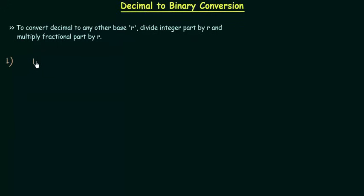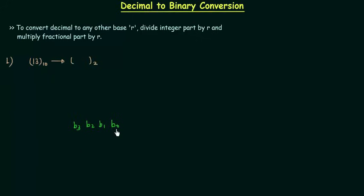Let's say the decimal number is 13 and we want the binary equivalent of 13. If you remember the last presentation, I introduced positional weights for the binary number system. Let's say the number has bits b0, b1, b2, b3. The weight of the 0th position is 2 raised to power 0, the next is 2 raised to power 1, then 2 raised to power 2, and 2 raised to power 3.